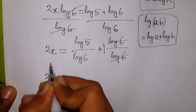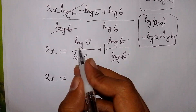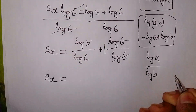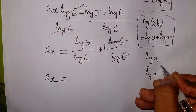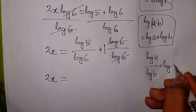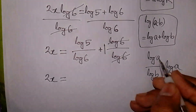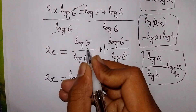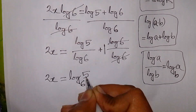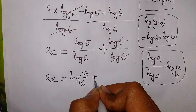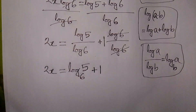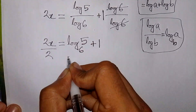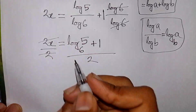So we have 2x equal to log 5 over log 6 plus 1. We can apply the change of base formula: log a over log b is equal to log base b of a. So this becomes log base 6 of 5 plus 1. Now we divide both sides by 2, so this 2 will be cancelled.